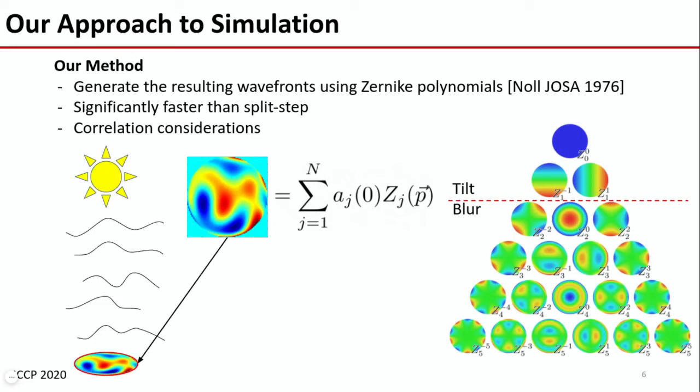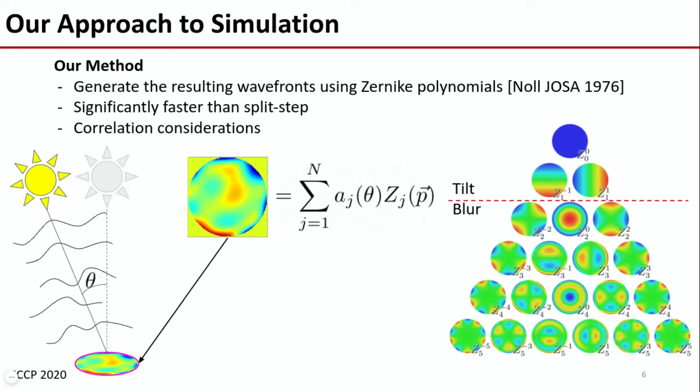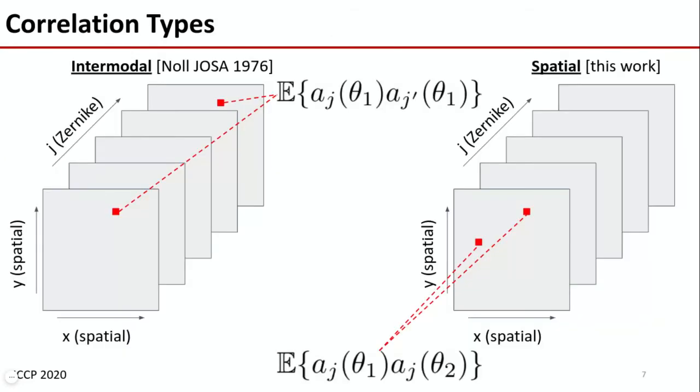When considering a second point source, the correlation becomes difficult as a function of their angles of arrival. The correlations of the bases above the line are known, but not those below. By using the Zernike polynomials, we introduce another type of correlation, intermodal. That is, what is the correlation between two coefficients from the same point source? Luckily, Noll has already taken care of this. Therefore, we'd like to include both types of correlations in our simulator, intermodal and spatial.